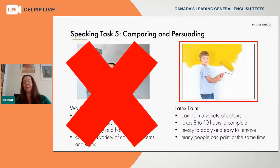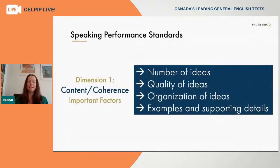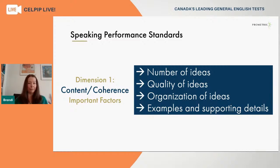For practice today, we're selecting the latex paint option and not going to talk about the wallpaper option at all. As soon as you make that choice, you're never going to use information from the other choice again — just let that go. Focus your remaining prep time on those bulleted points beneath the picture. They provide the main ideas you're going to talk about. When you start to speak, the raters will look for you to demonstrate four different skill sets. The first is about content details and coherence — the number of ideas has already been given to you from those bulleted points.